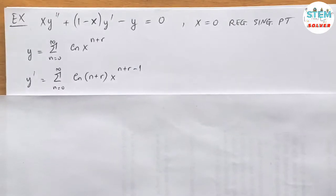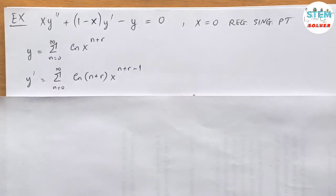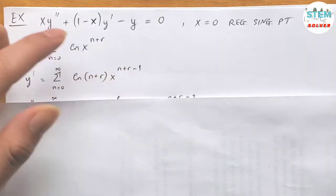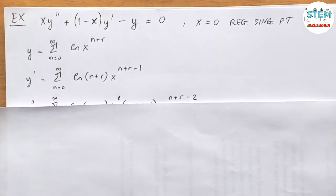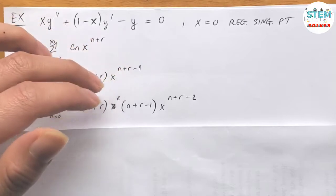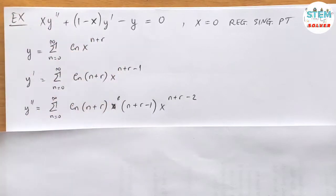Take the first derivative: y prime equals the power series from 0 to infinity of c_n · (n plus r) · x to the n plus r minus 1 — you bring down the exponent and subtract the exponent by 1. Take the second derivative: y double prime equals the power series from 0 to infinity of c_n · (n plus r) · (n plus r minus 1) · x to the n plus r minus 2.